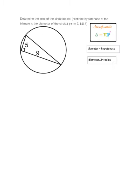Okay, here's our next problem. It says determine the area of a circle below. Hint, the hypotenuse of the triangle is the diameter of the circle. And Pi equals three point one four one five. Alright, well let's take a look at this. They want us to find the area of this circle. That means we are trying to calculate how much space is inside the circle.